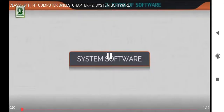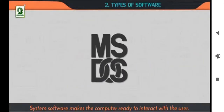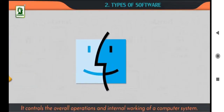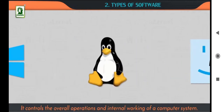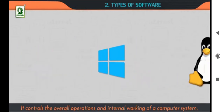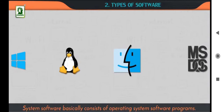System software makes the computer ready to interact with the user. It controls the overall operations and internal working of a computer system. System software basically consists of operating system software programs.